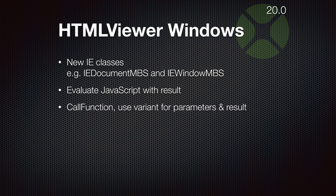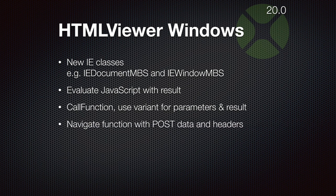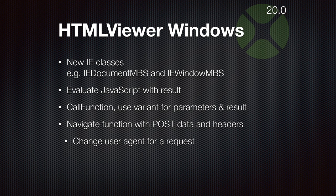You can also call a function and, as a specialty to make it easier for you, we support passing parameters as variants. So you can pass in your function parameters with Xojo data types and get the result as a variant. The navigate function allows you to load a website and send along data for a POST operation and custom headers. This is useful because some websites can be triggered with a POST operation where you send in JSON or XML and get back a result website shown immediately in the HTML viewer. The custom headers allow you to send a custom user agent string, so you can claim to be Firefox or Safari instead of being detected as Internet Explorer.